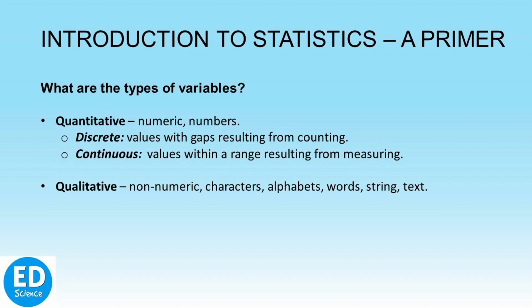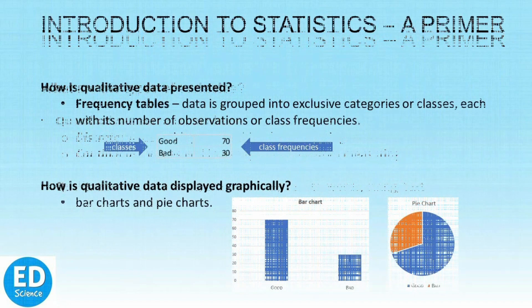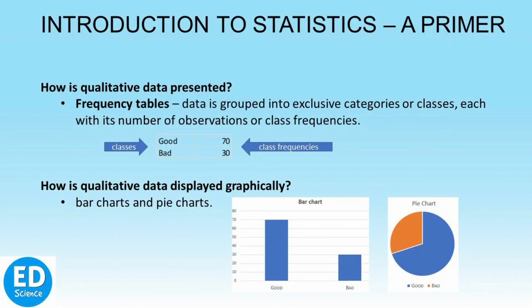How can we organize and present characters and numbers? Qualitative or non-numeric data can be presented as frequency tables in a table format, like in an Excel table, where data is grouped into exclusive categories like good or bad, with each category showing a certain number of observations. When we say how many times good or bad, in this case we actually refer to the class frequency.